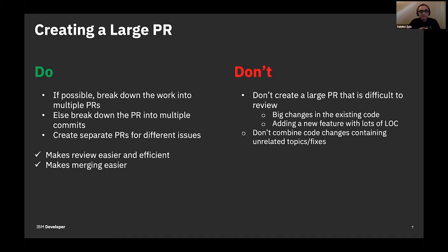Somewhat contradictory to my previous point: if you're working on something big — substantial changes to existing code or adding a new feature with lots of lines of code — try to break it down into multiple PRs. If you can't create independent PRs that pass tests on their own, you can create multiple commits, which helps reviewers because a huge change is hard to review. Also, if you're fixing something and see other problems, don't try to fix different things of different contexts in one PR, as that confuses reviewers.